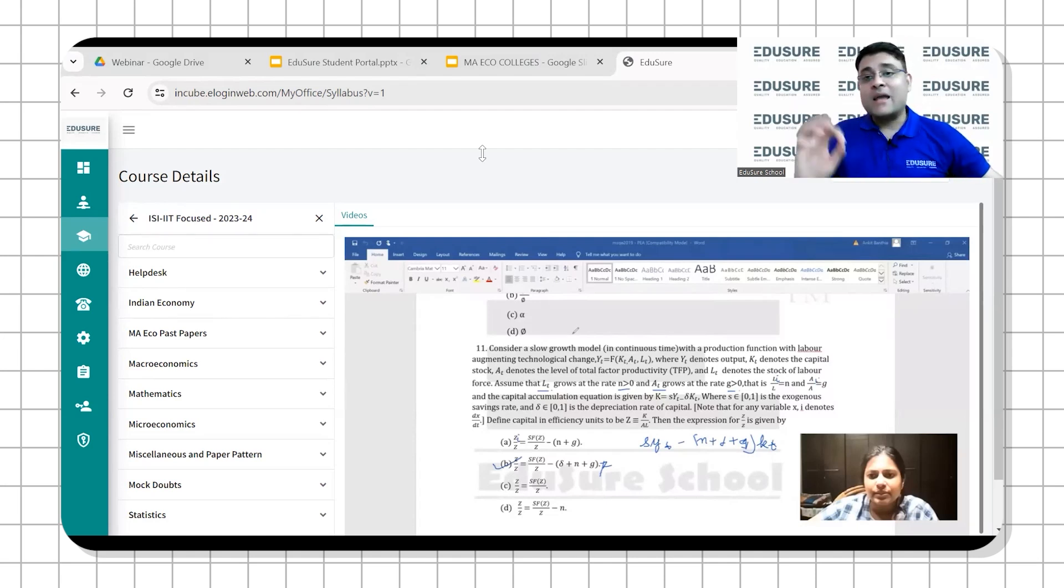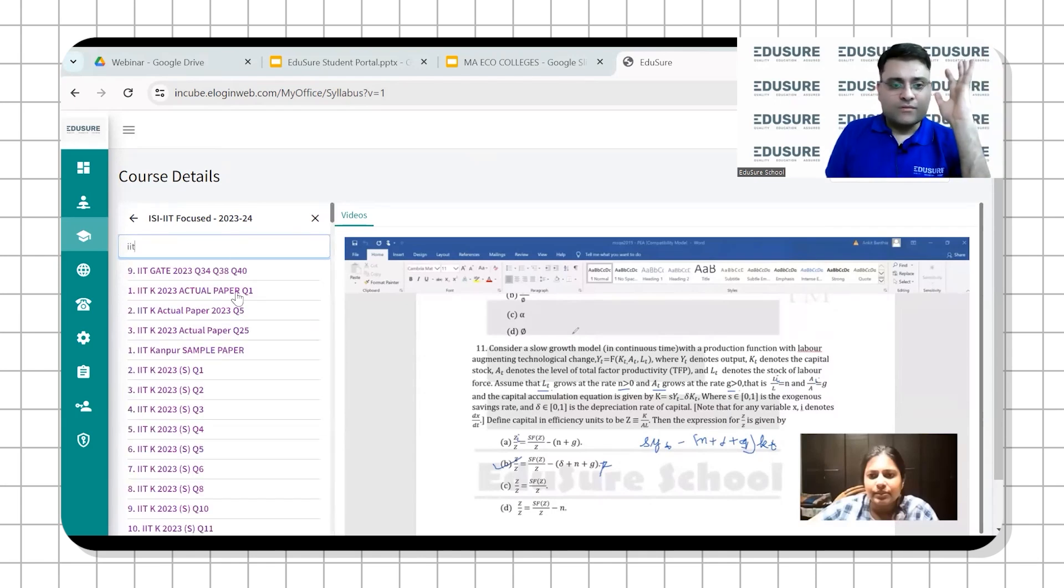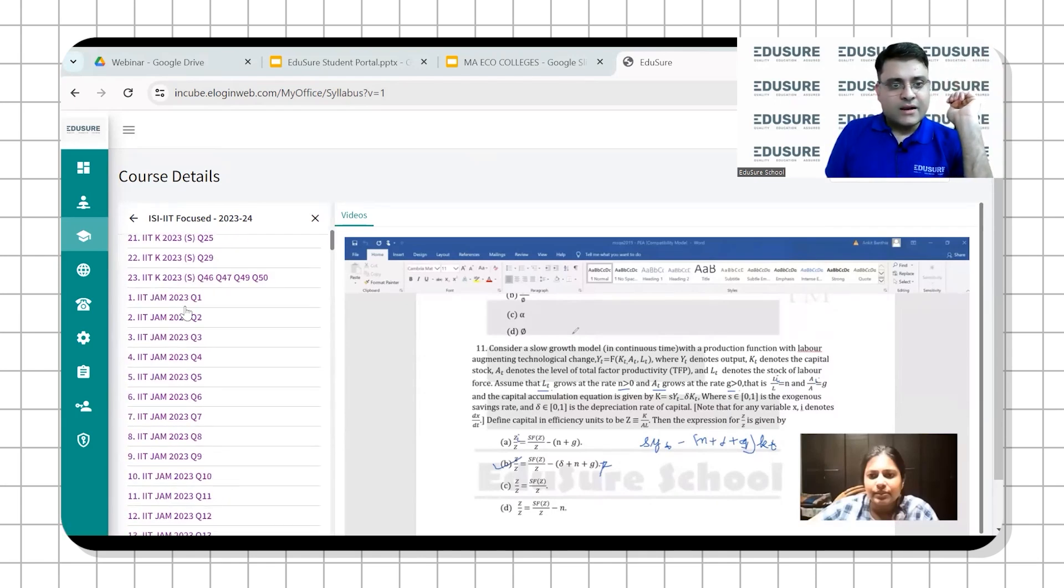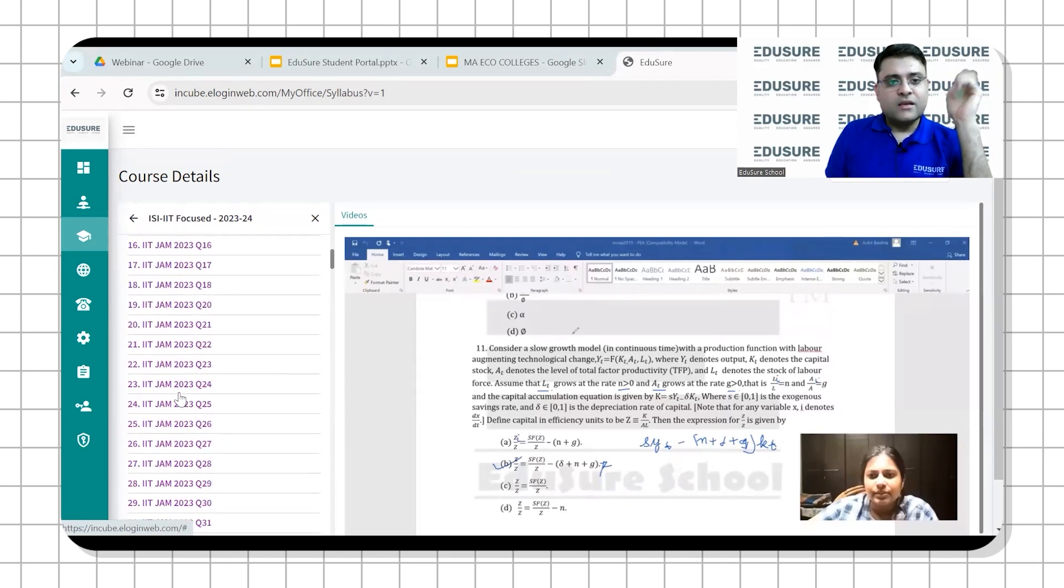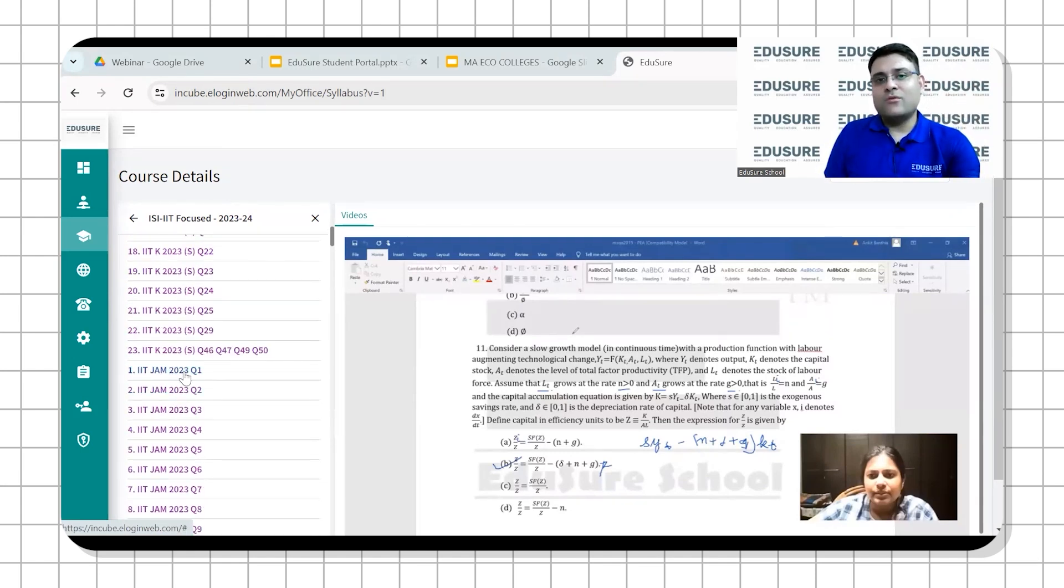All the IIT papers are also solved. IIT JAM 1, 2, 3, 4, 5, 6, 7, 8, 9, 10. These are all the IIT. This we did right before the IIT JAM and GATE.